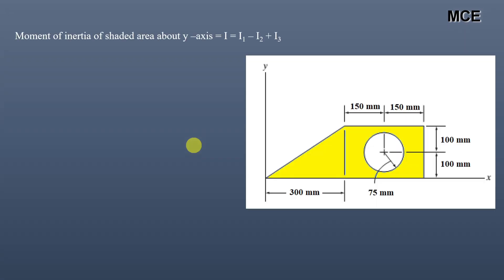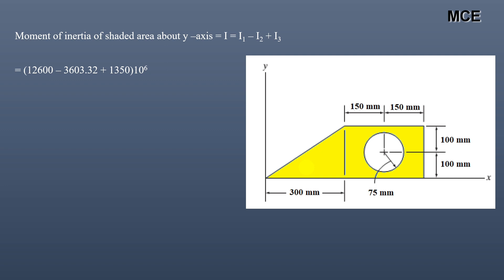The moment of inertia of this composite shape equals the moment of inertia of the rectangle minus the moment of inertia of the circular portion plus the moment of inertia of the triangular portion, because we have to find the moment of inertia of the shaded portion — the circular portion is cut out, which is why we subtract it. So it equals 12600 − 3603.32 + 1350 × 10⁶ = 10346.68 × 10⁶ mm⁴. Rounded to three significant figures, this is 10300 × 10⁶ mm⁴.